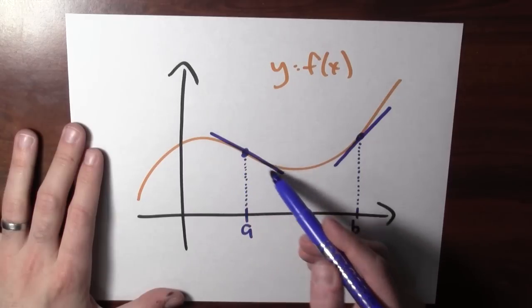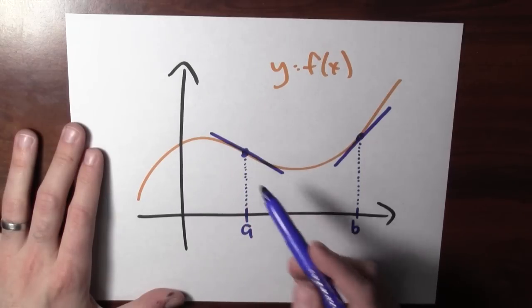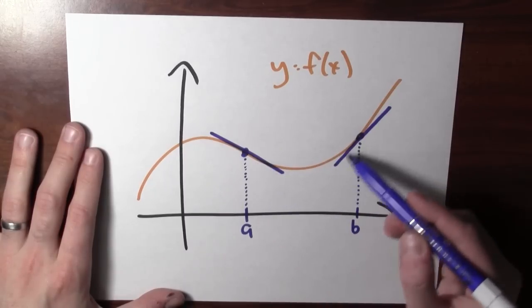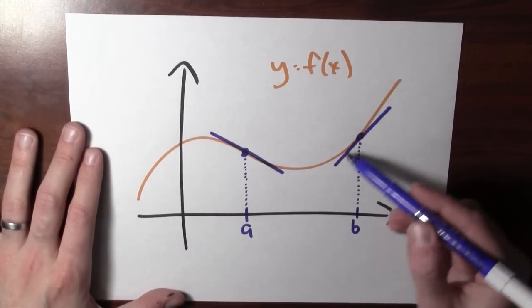Well, here at this point A, the slope of this tangent line is negative. The derivative is negative, and the function's going down here. At this point B, the slope of this tangent line is positive, and the function's increasing through here.